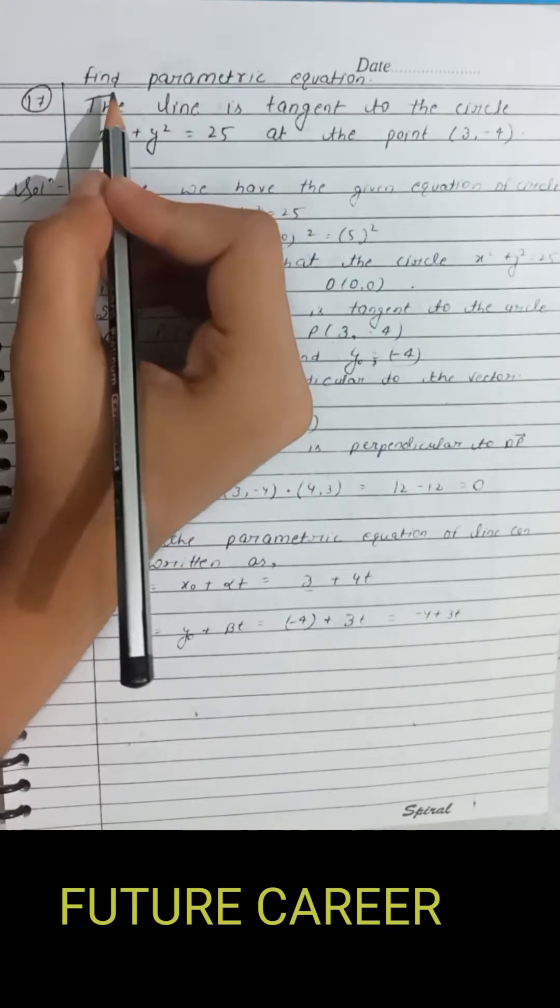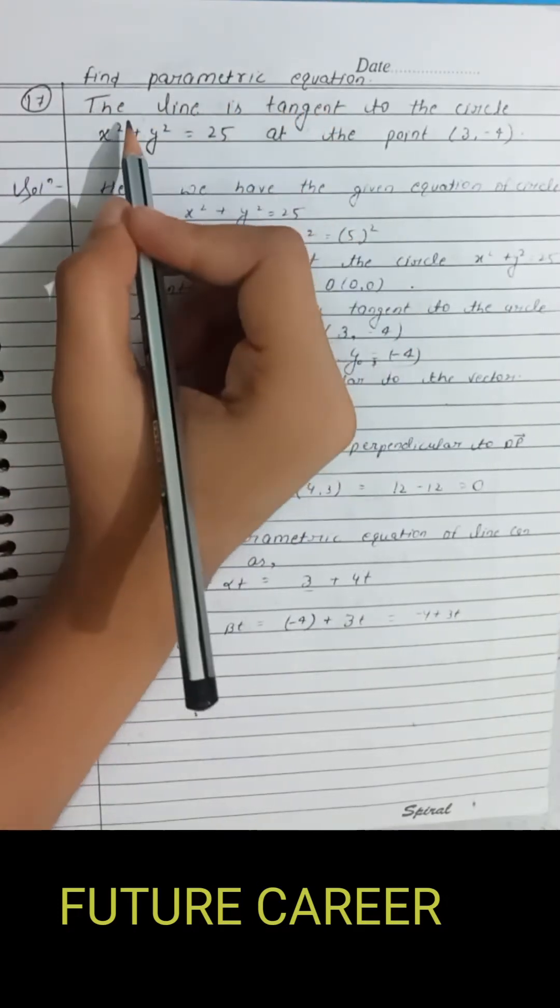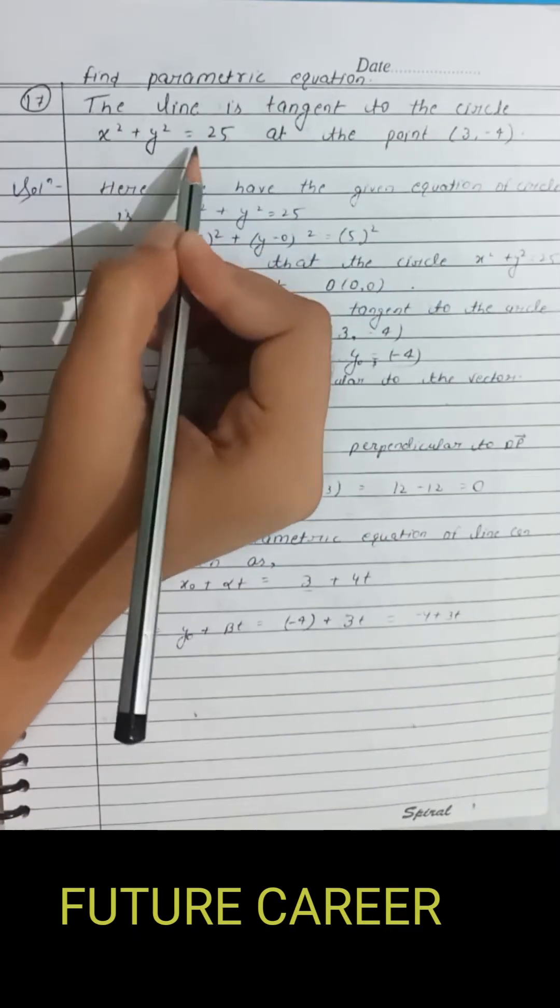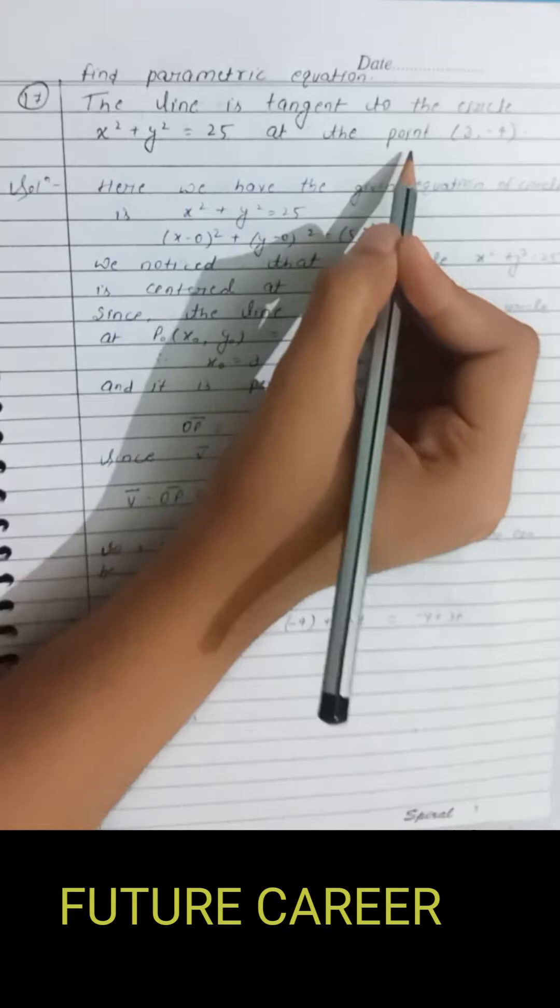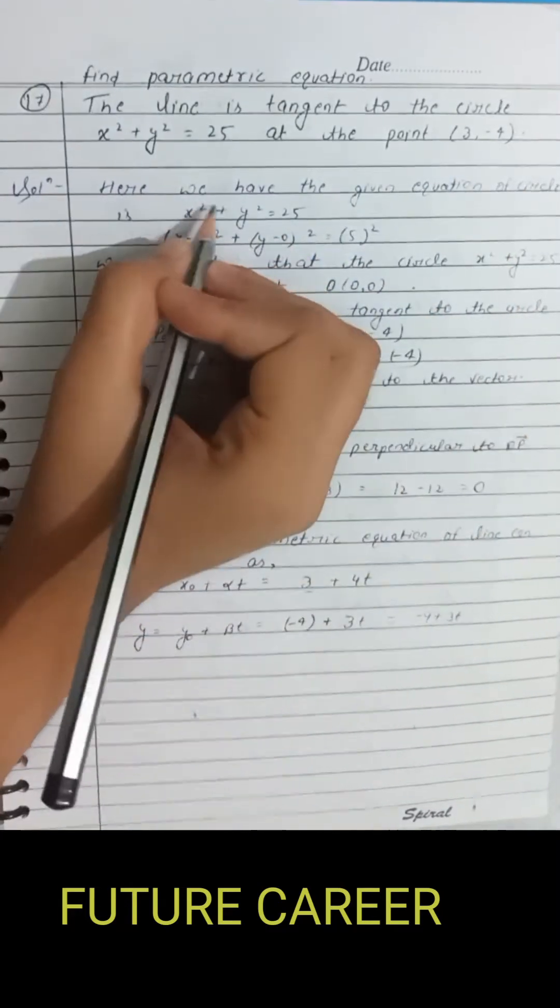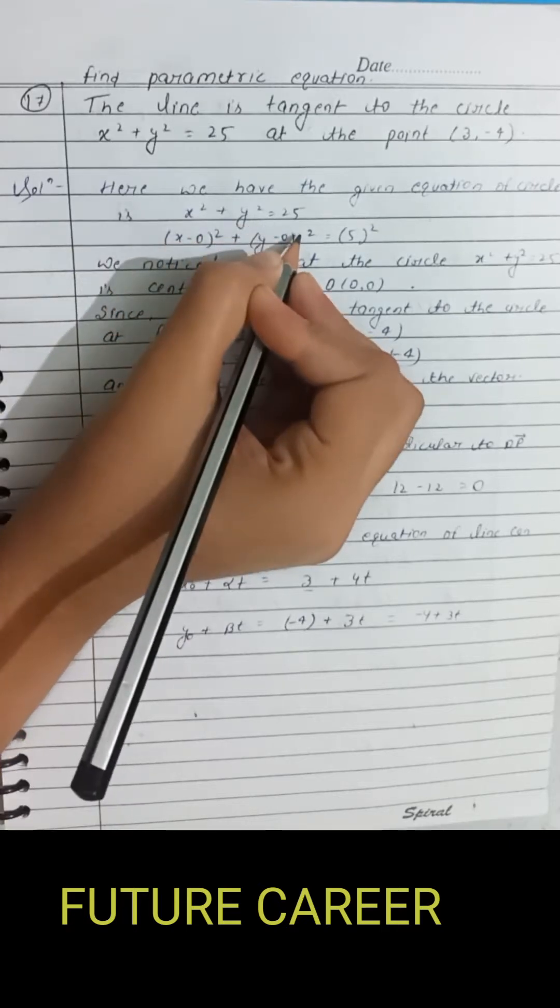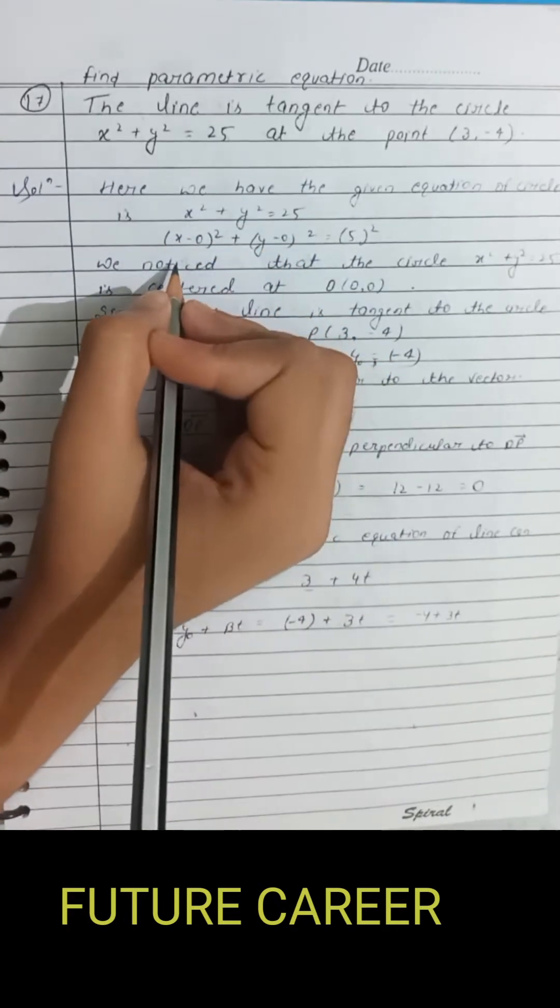Here we have the given question: find the parametric equation of the line tangent to the circle x squared plus y squared equals 25 at the point (3, -4). So here we have the given equation of circle x squared plus y squared equals 25, and as we know that the general equation of circle is (x - x1) squared plus (y - y1) squared equals r squared.